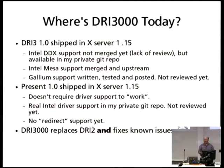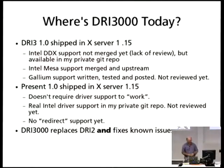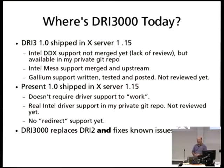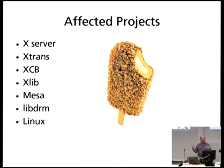So where is DRI 3000 today? Did we actually have any success? DRI 3 and the present extensions version 1.0 shipped in the server. There are some advantages to being the X server maintainer — some of the code I wanted to merge, it was like, 'I'm not going to ship your code until you review my patches.' So all of my code got neatly reviewed and merged in time for the merge window to close. DRI 3000 successfully replaces DRI 2, fixes known issues, and provides opportunity to implement cool new GL extensions that we couldn't do in the existing system. Total unmitigating success.